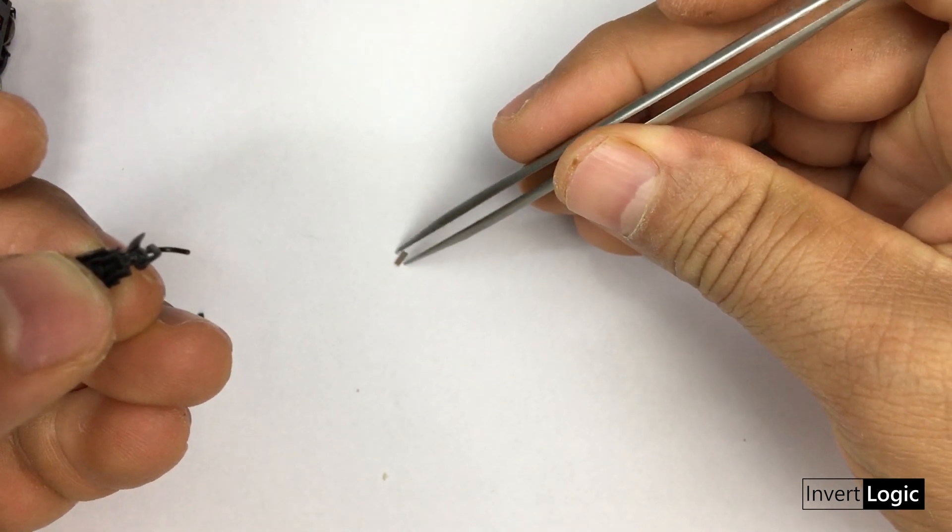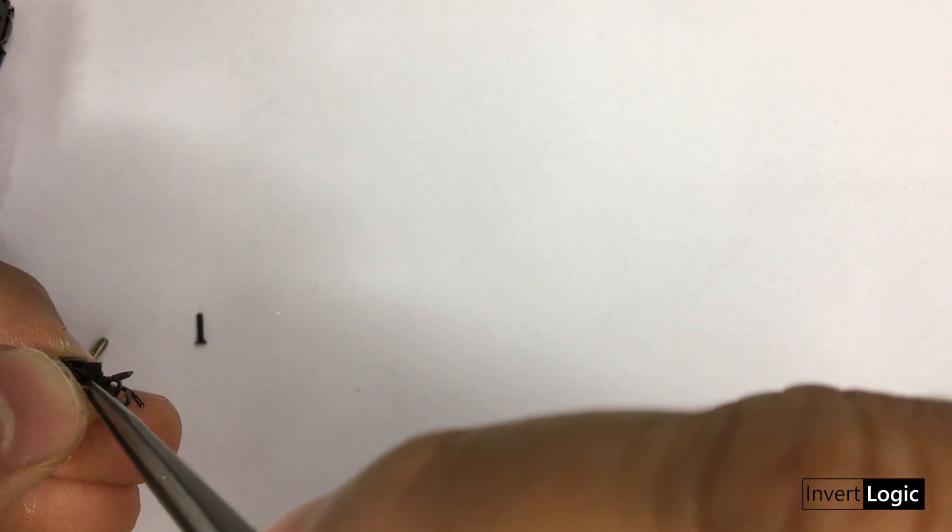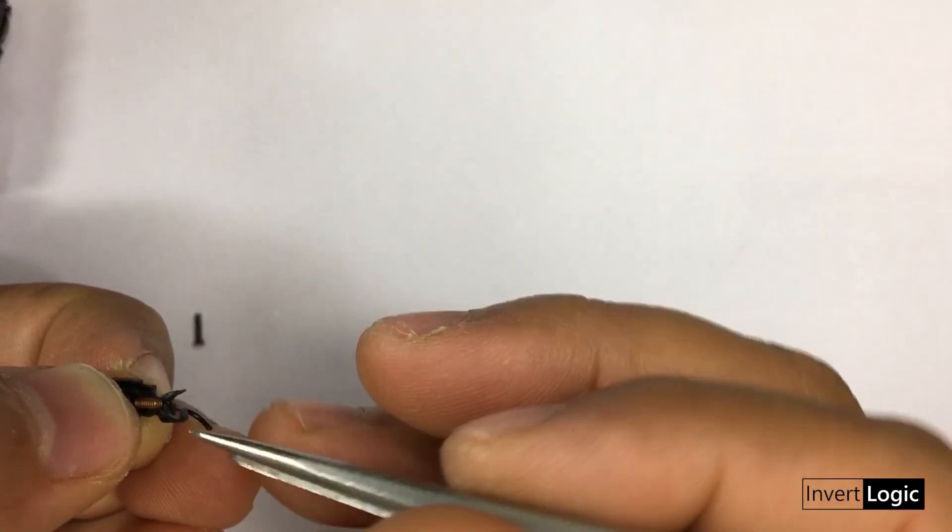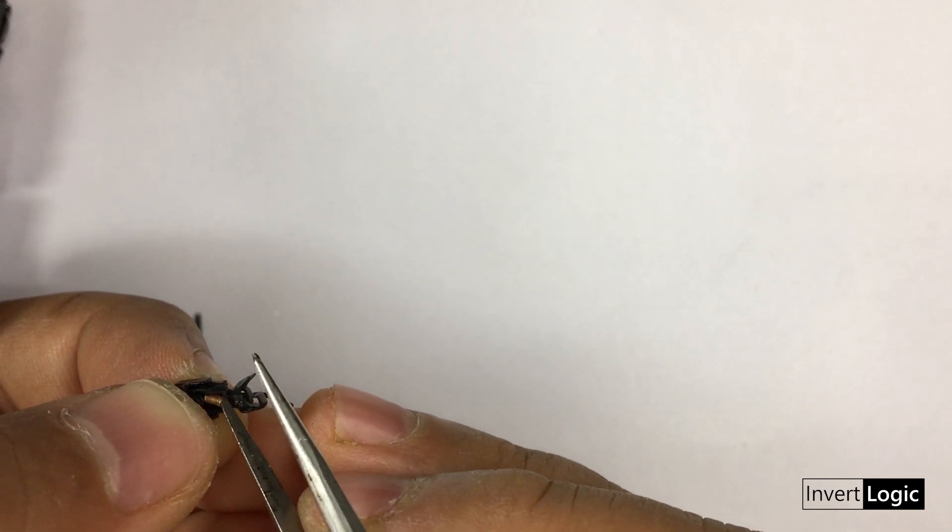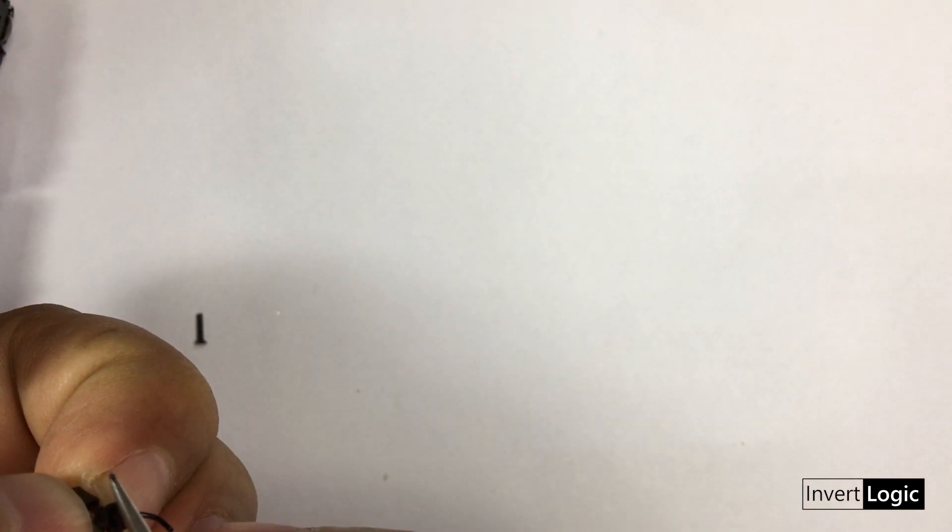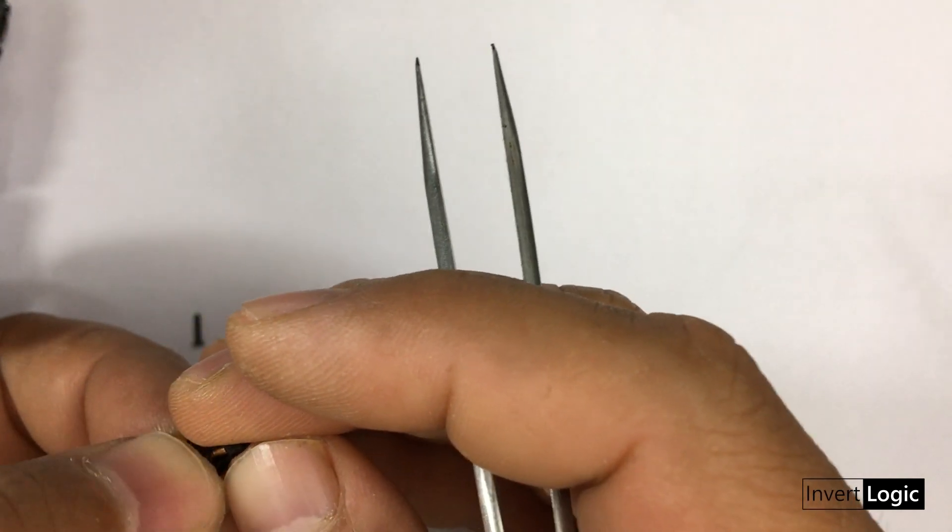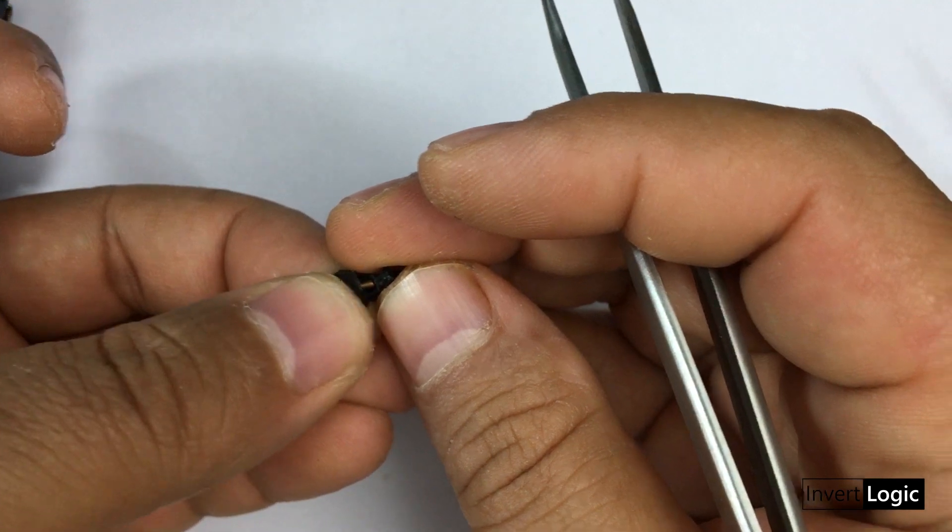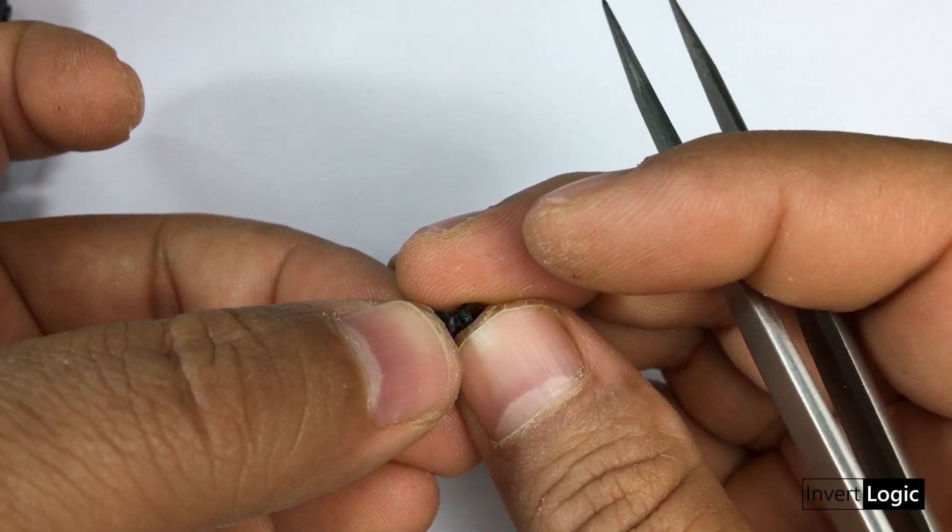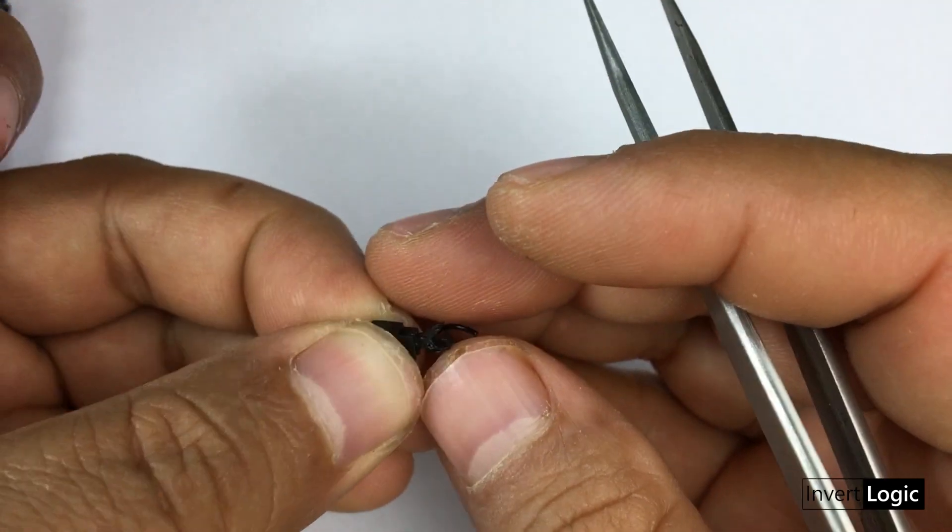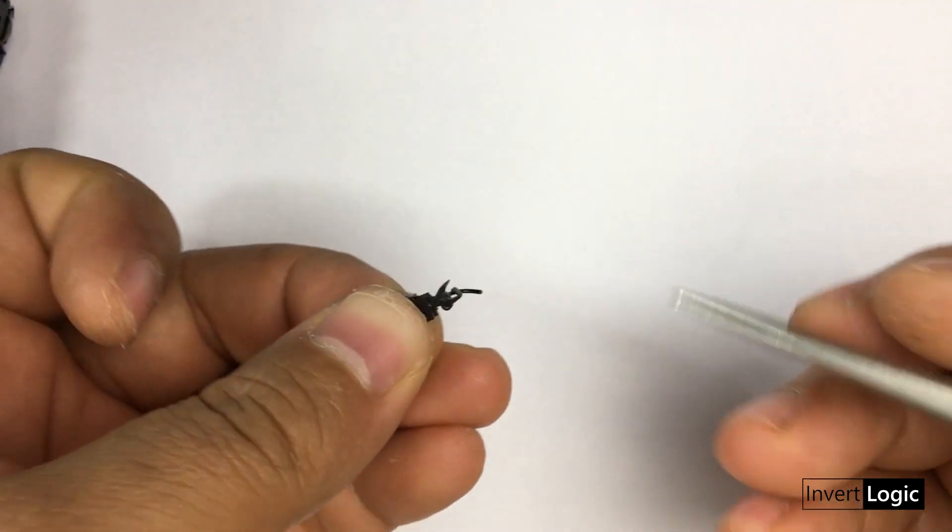Now you can see I'm trying to put the spring inside. This part is very tricky and you might misplace your spring sometimes. Do this in an area where you can find the spring easily. I did this on white paper so I can see it easily - it's a very small spring and hard to see if you misplace it.